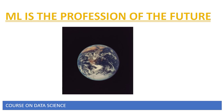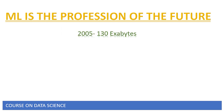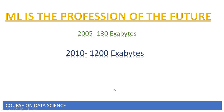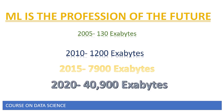So now it should be more impressive that since the dawn of time up until 2005, humans had created 130 exabytes of data — that includes all the books ever written, all the songs ever sung, all the words ever spoken. Now in 2010 that number was already 1,200 exabytes. Then in the next five years, by 2015, this number became 7,900 exabytes. And by 2020 this number is estimated to reach 14,900 exabytes of data.